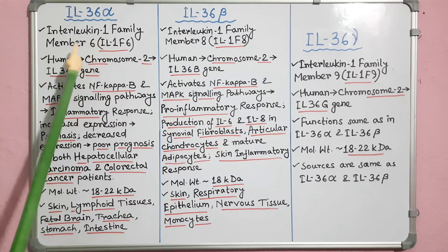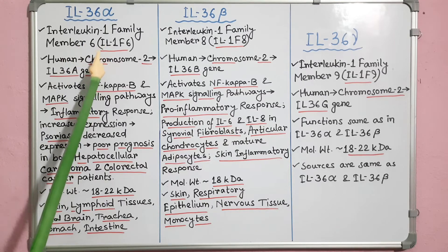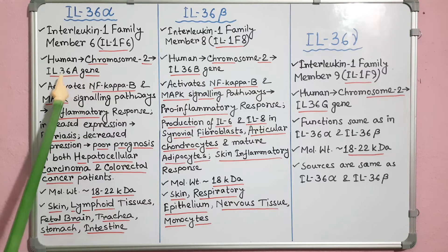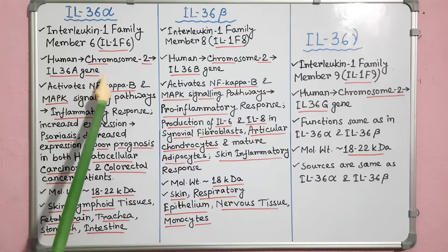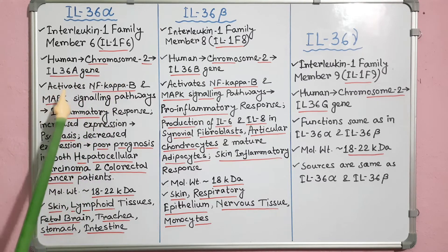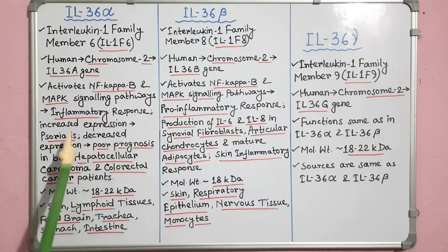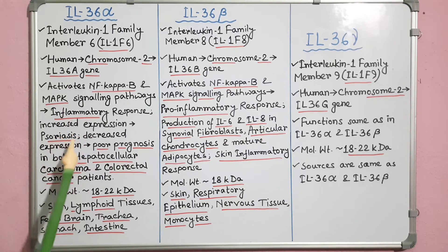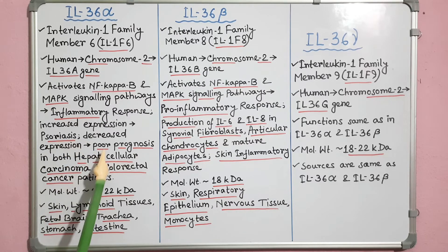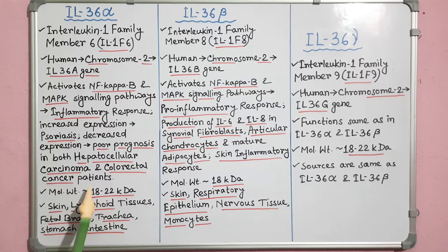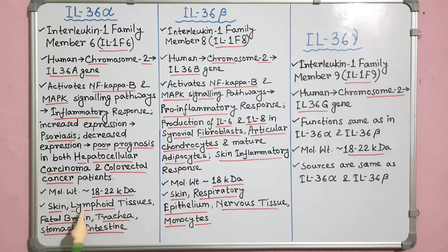Interleukin-36 alpha is also known as interleukin-1 family member 6 or IL-1F6. In humans, it is encoded by the IL-36A gene of chromosome 2. This cytokine can activate NF-kB and MAPK signaling pathways to generate inflammatory response. It functions primarily in skin and increased expression causes psoriasis. Decreased expression has been linked to poor prognosis in hepatocellular carcinoma and colorectal cancer patients. It is 18 to 22 kilodalton, and is mostly found in skin and lymphoid tissues, but also in fetal brain, trachea, stomach and intestine.